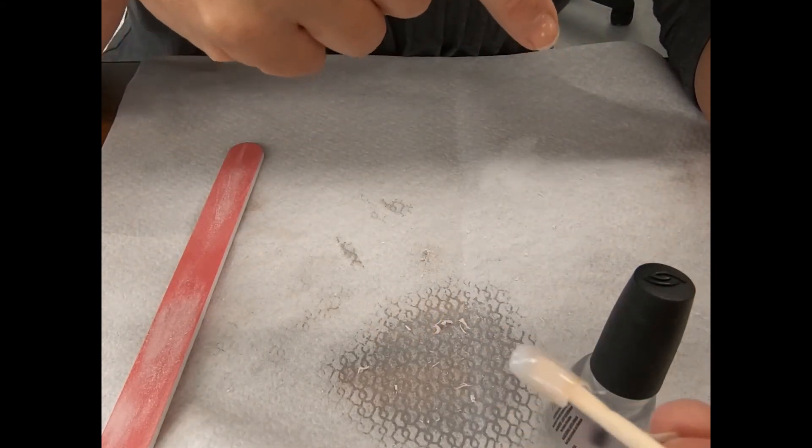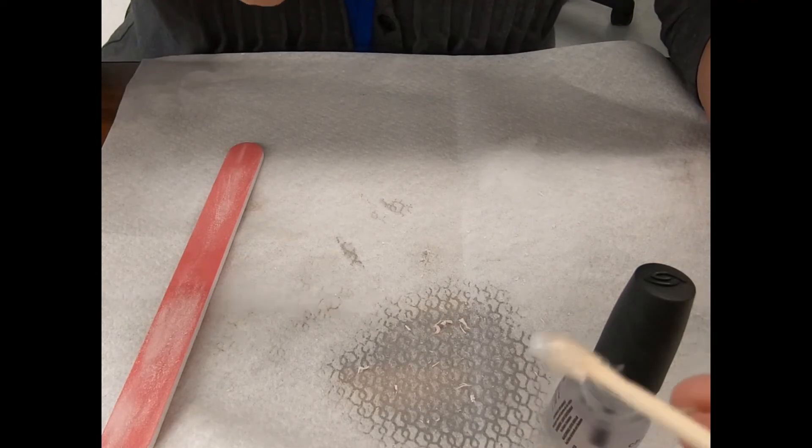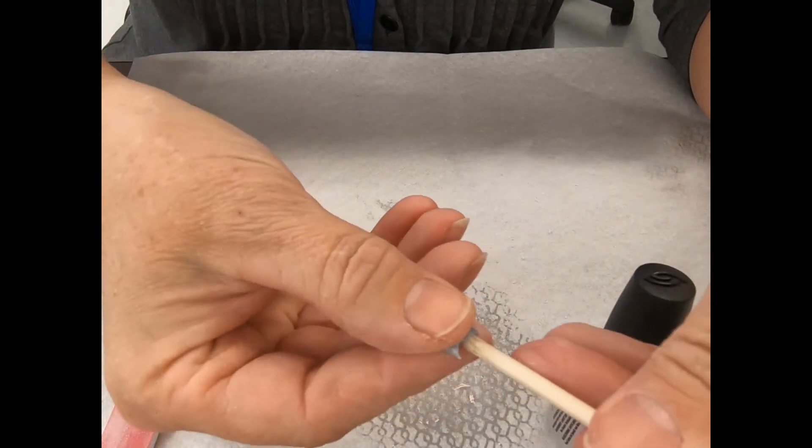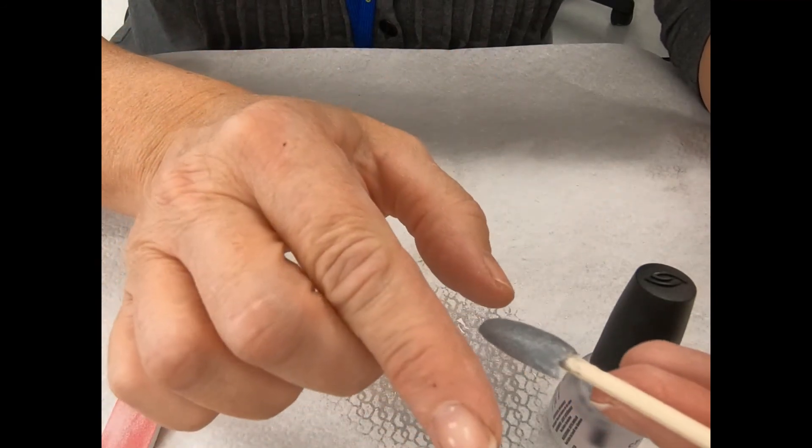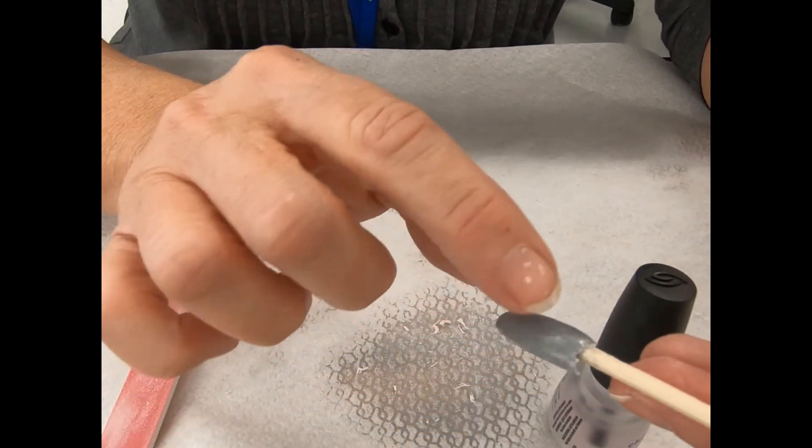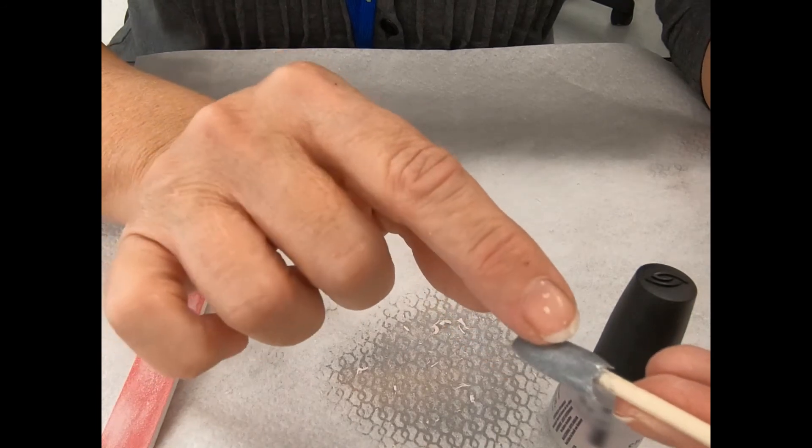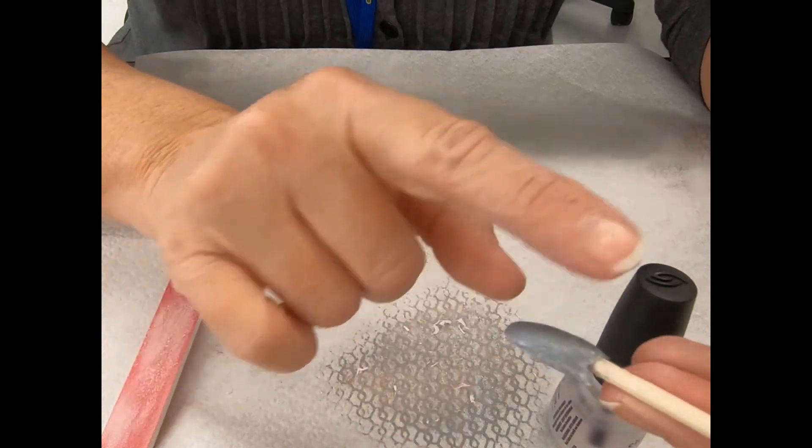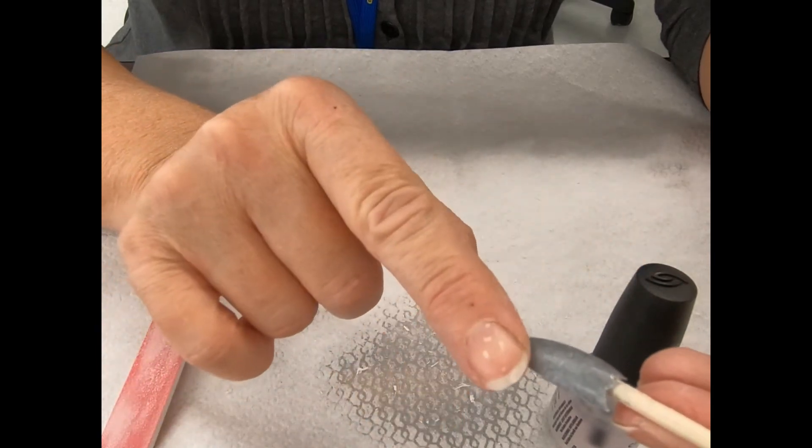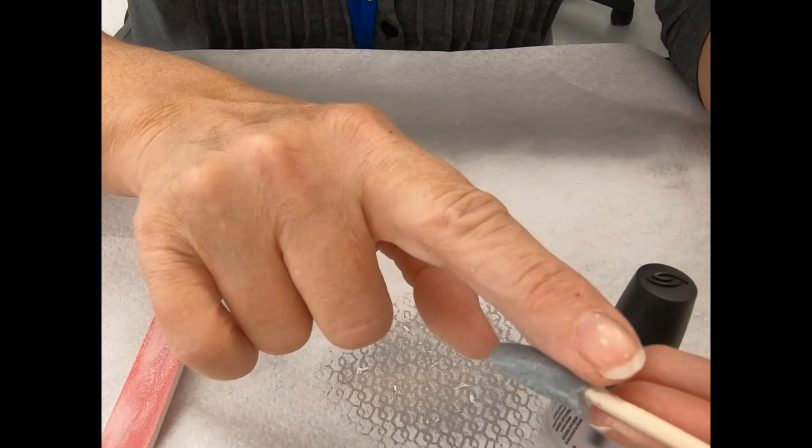The other thing is when you're filing, if I would start to file this one again and everything would look frosty but maybe a couple spots, what that means is those are low spots. So you have to file until everything looks frosty. If not, you're going to have a bumpy nail.